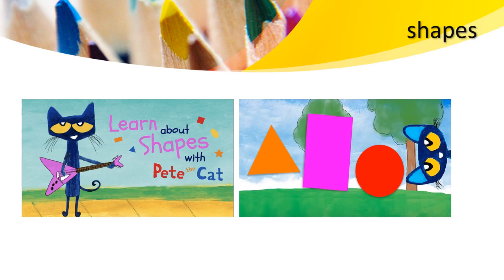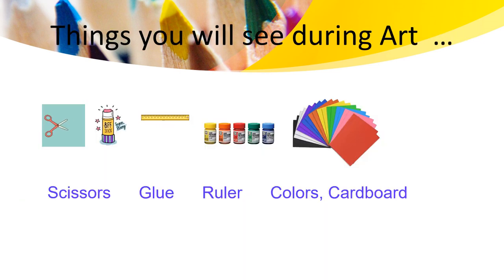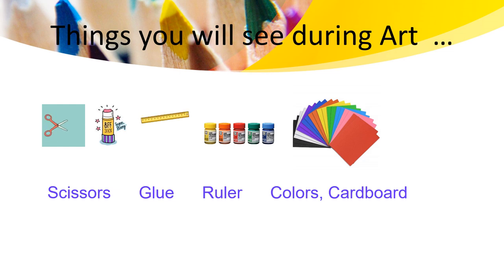Do you see a rectangle around you? Yes, your bed might be a rectangle. There is a triangle. What things do you see around you as a triangle? Things you use during art class — you guys are going to use scissors, glue, rulers, cardboard, and also colors. I can't wait to see you KG2 learners.